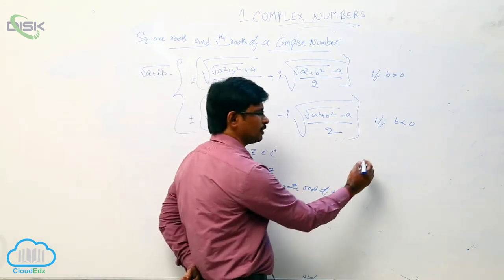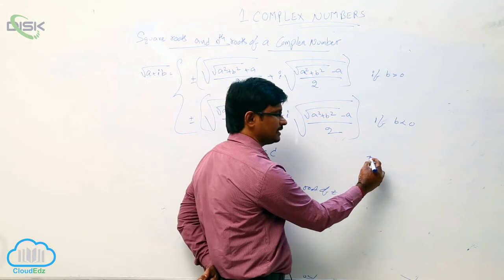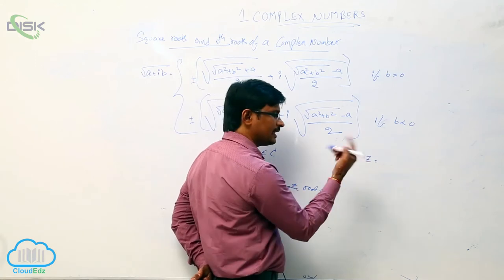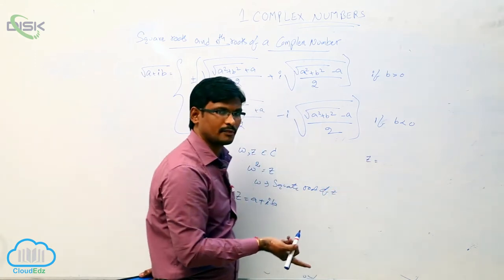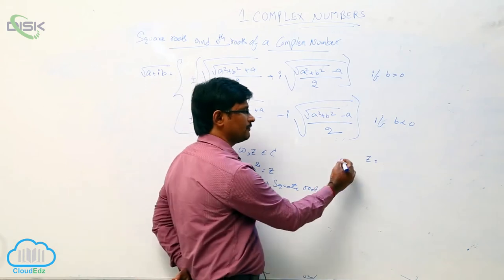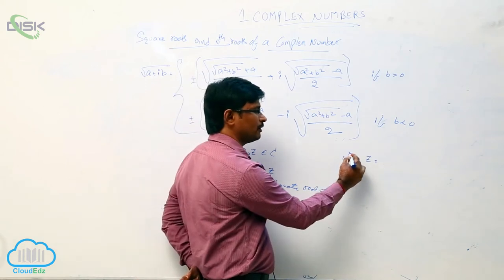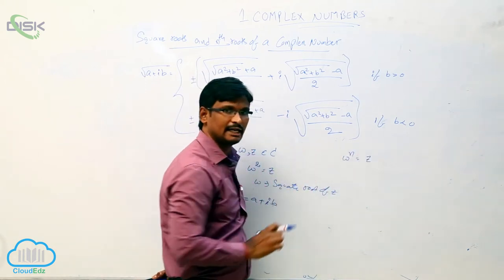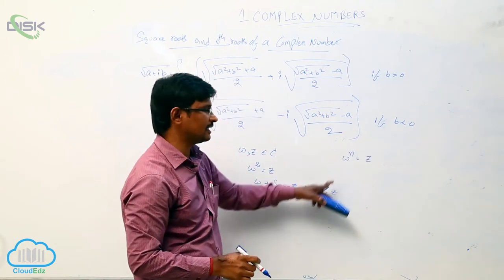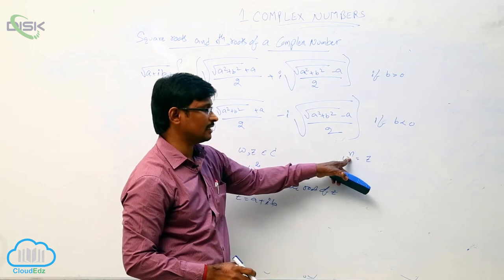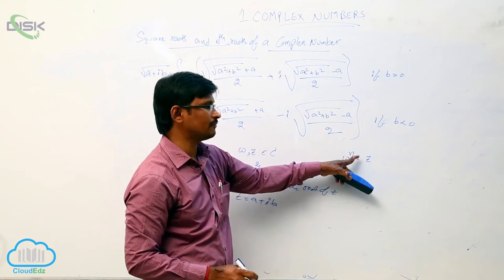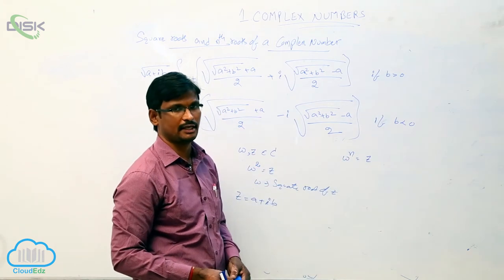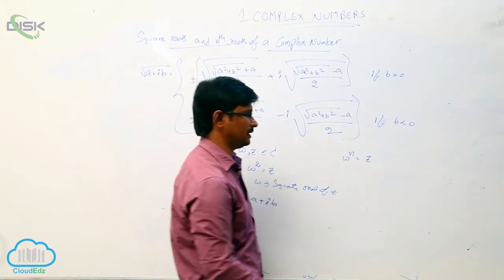One more property: if W to the power N equals Z, then we can say that W is the nth root of Z.